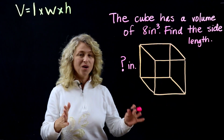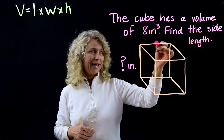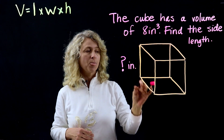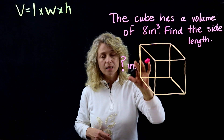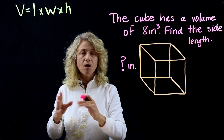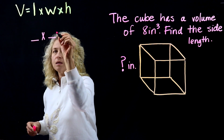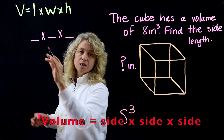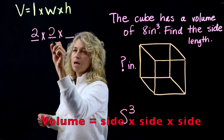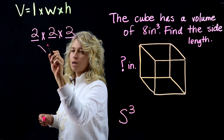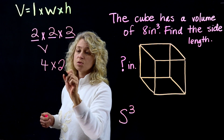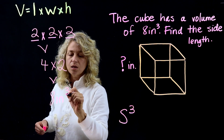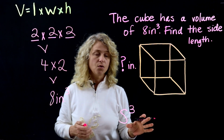If a cube has a volume of 8 inches cubed, how do we find the side length? Think: something times something times something equals 8. Side cubed — let's try 2. 2 times 2 is 4, and 4 times 2 equals 8. That works! So the side length is 2 inches. You can work backwards to find the side length when given the volume.